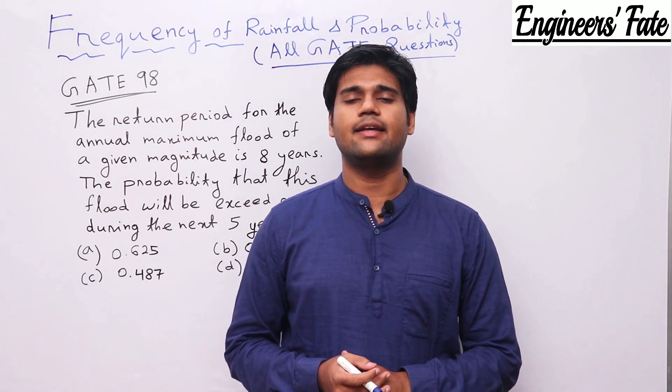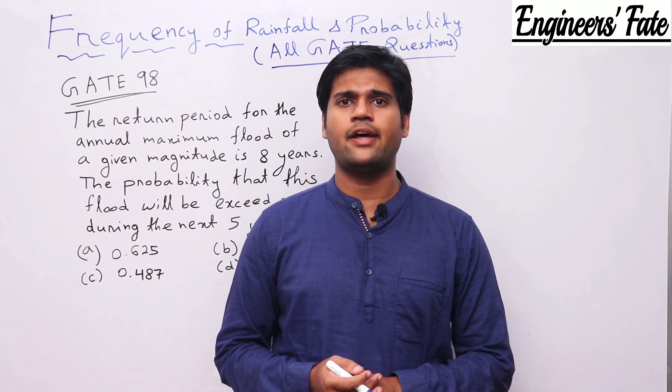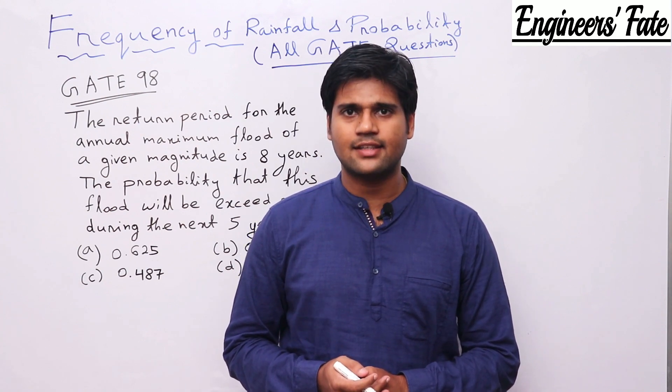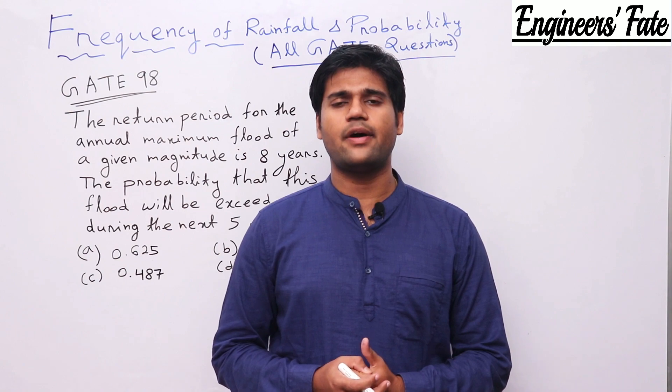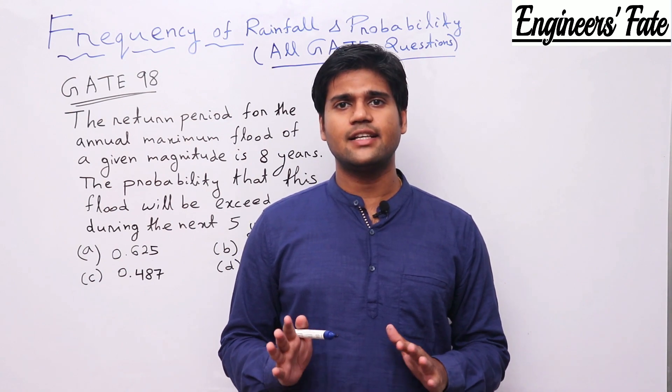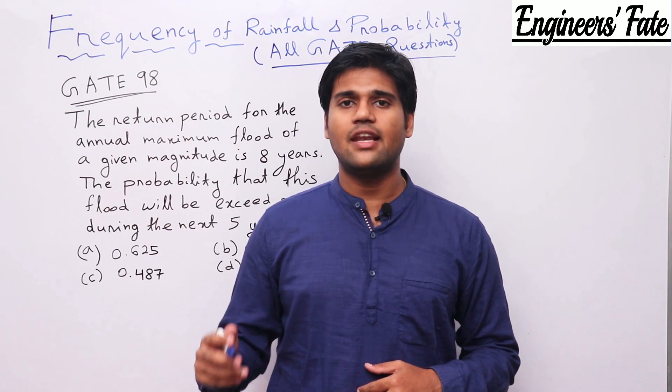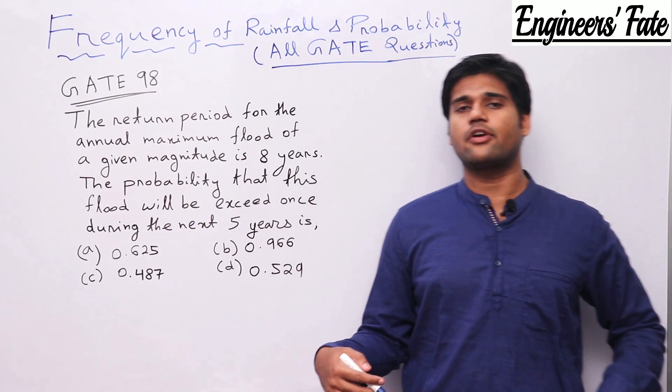Then reliability. Reliability equal to Q to the power N. Then risk. Risk equal to 1 minus Q to the power N. So these are the things you have to remember. So let us proceed and solve the questions.